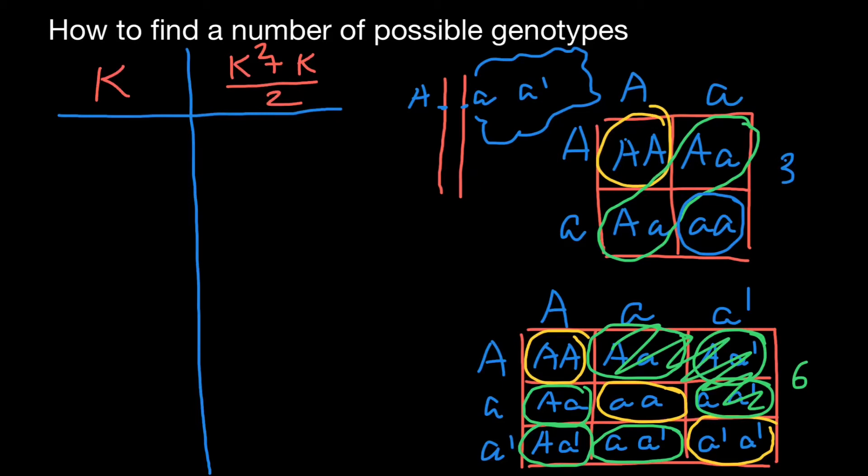So for example, with two alleles model, with two alleles, according to this formula, how many genotypes we would have. Two squared would be four plus two would be six divided by two. We are going to have three genotypes. And this is what we see here. Two alleles would produce three genotypes.